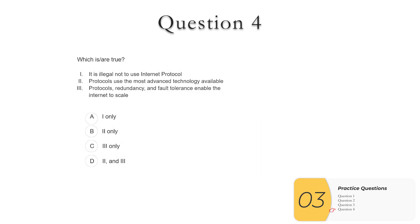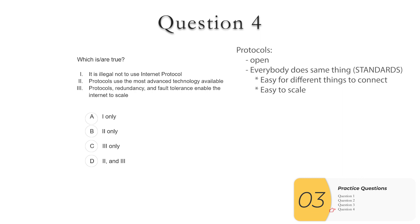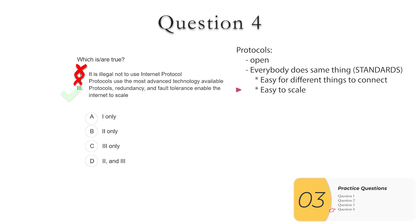Question four — which is or are true? One: it is illegal not to use the Internet Protocol — not true; you wouldn't be able to connect to anybody, but you can do anything you like. Two: protocols use the most advanced technology available — not true; protocols are standards for easy connection, and if you changed them every year every time something new came out, it would defeat the whole purpose. Three: fault tolerance, redundancy, and protocols enable the internet to scale — this is true. Answer is C: three only.